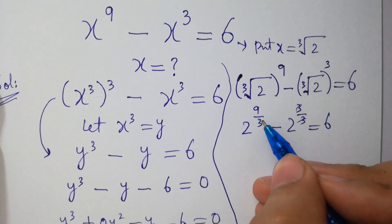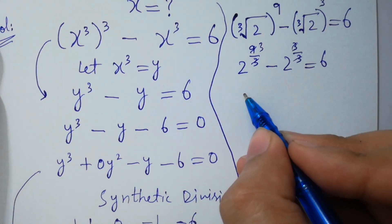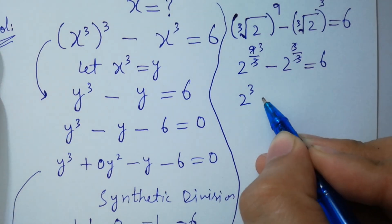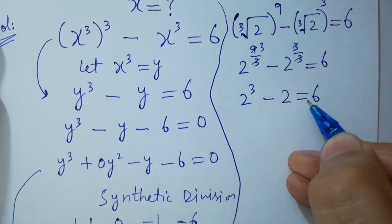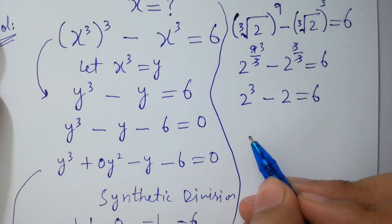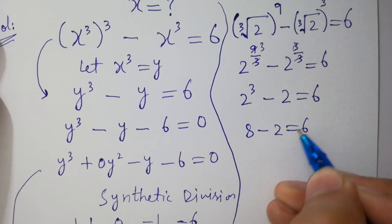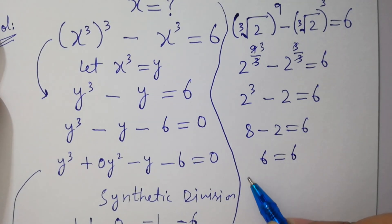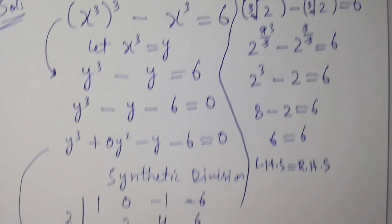3 and 3 will be cancelled, 3 times 3, 9, we get 2 cube minus 2 equal to 6. 2 cube equal to 8, minus 2, equal to 6, 8 minus 2, 6, equal to 6. Left hand side equal to right hand side, which shows that.